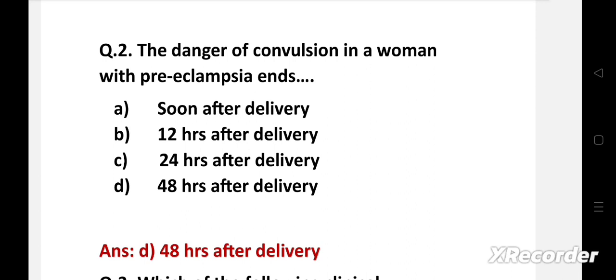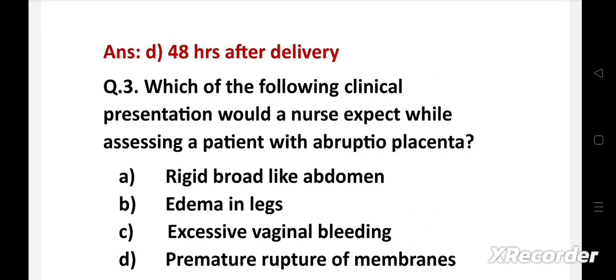Which of the following clinical presentation would a nurse expect while assessing a patient with abruptio placenta? Option a: rigid broad-like abdomen, b: edema in legs, c: excessive vaginal bleeding, d: premature rupture of membranes.